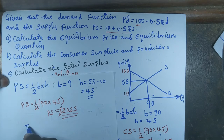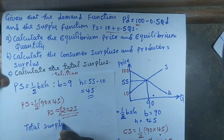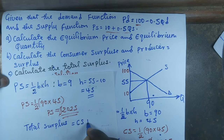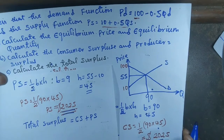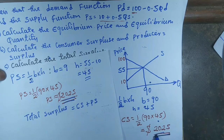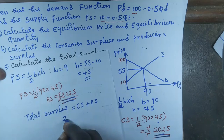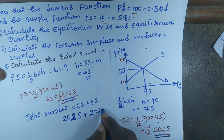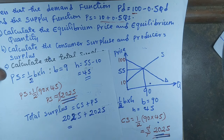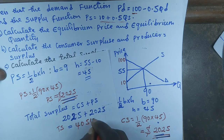Lastly, we look for total surplus. Total surplus is equal to consumer surplus plus producer surplus. So we add 2,025 plus 2,025, which gives us a total surplus equal to 4,050 US dollars.